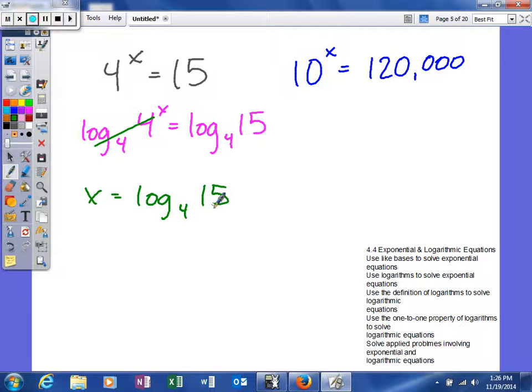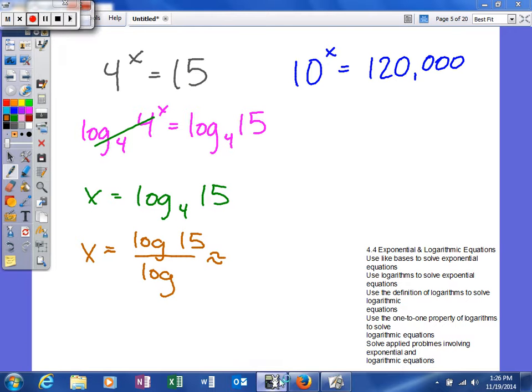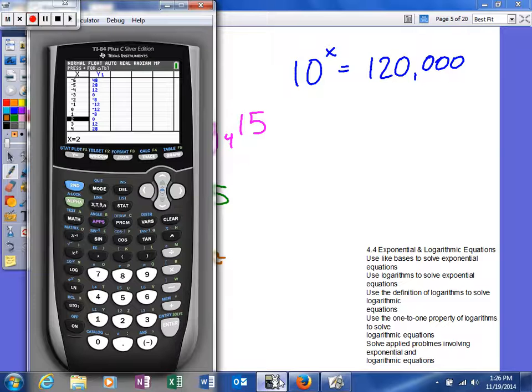Now what we can do is we can find the answer for that by using the change of base formula. So I'm going to do it as a ratio of common logarithms first. So log of 15 divided by the log of 4. And I'm going to get my calculator.